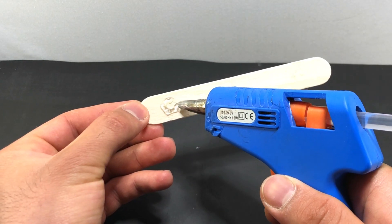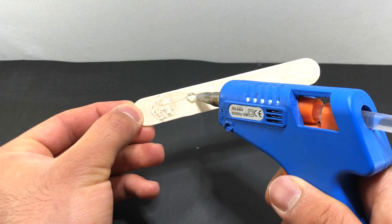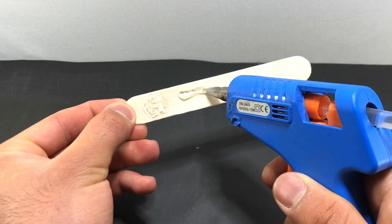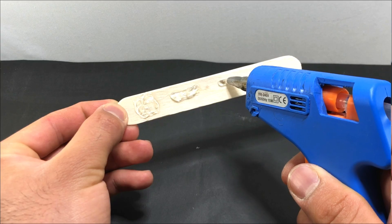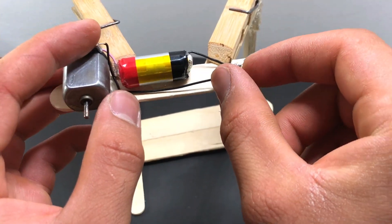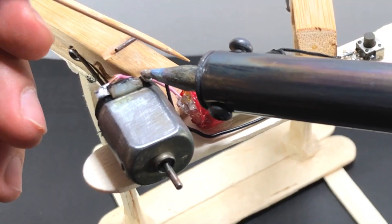Apply hot glue on the ice cream stick. We connect the circuit to the ice cream stick: DC motor, key, and battery. We connect the wire that you have with the negative pole to the DC motor and the circuit is complete.